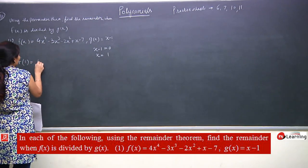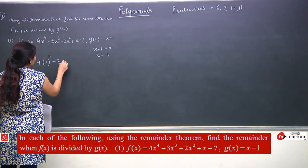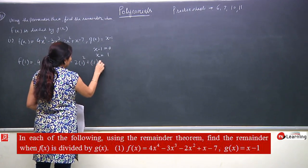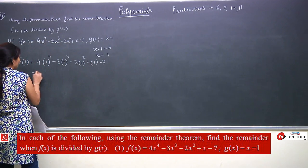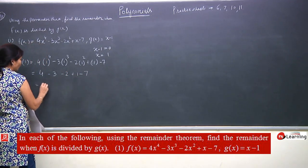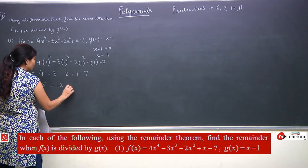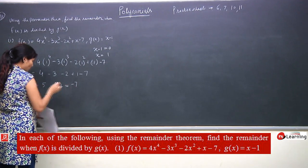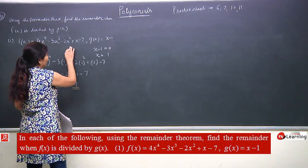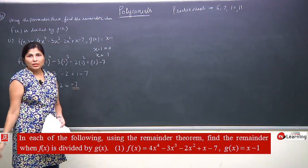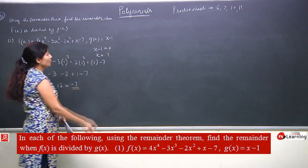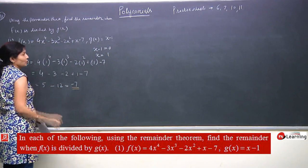f(1) equals 4(1)⁴ minus 3(1)³ minus 2(1)² plus 1 minus 7. Solving: 4 minus 3 minus 2 plus 1 minus 7 equals minus 7. So minus 7 is our remainder. This proves that this polynomial divided by (x minus 1) gives remainder minus 7.